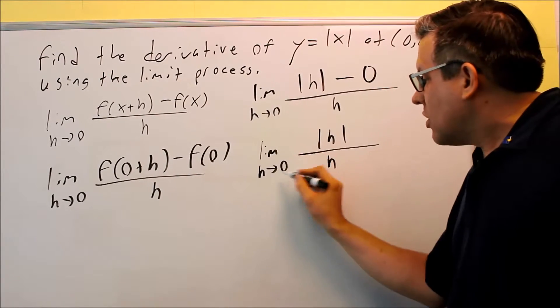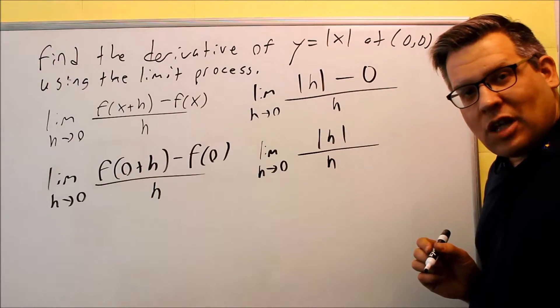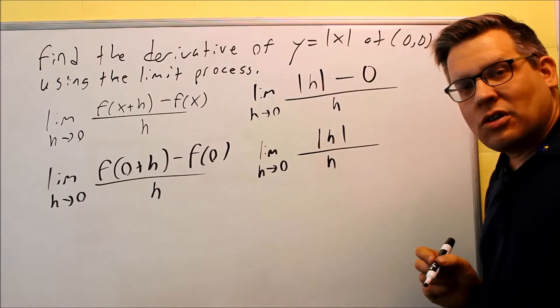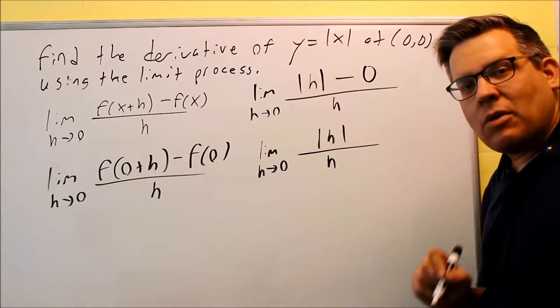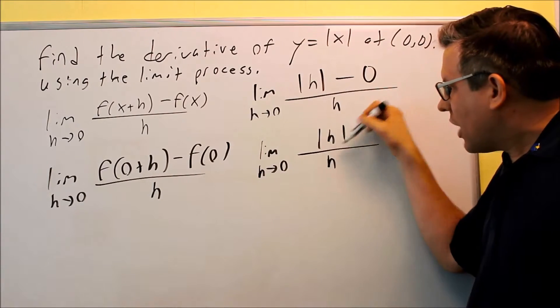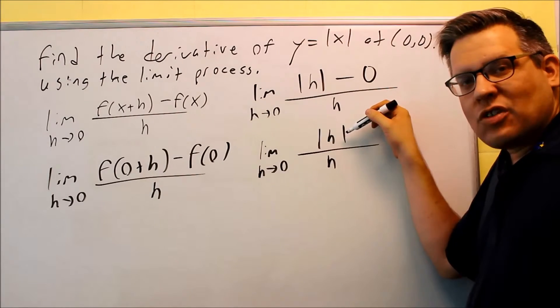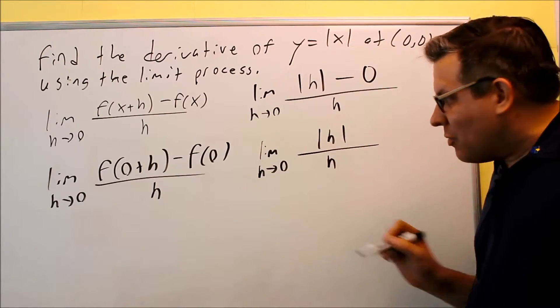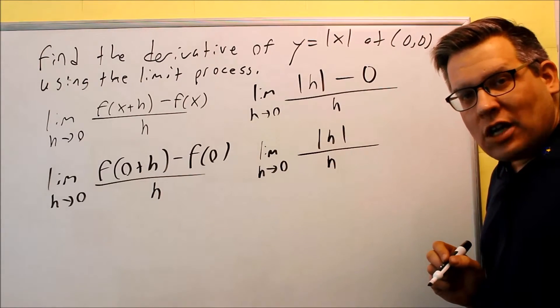If I approach this from the left, that means I'm going to be putting in a number that is just slightly less than 0. If it's less than 0, that means it must be a negative number. If I put a negative number in the top, absolute value is always going to make it positive, but the bottom number is going to be negative because I'm putting in a negative value for h.